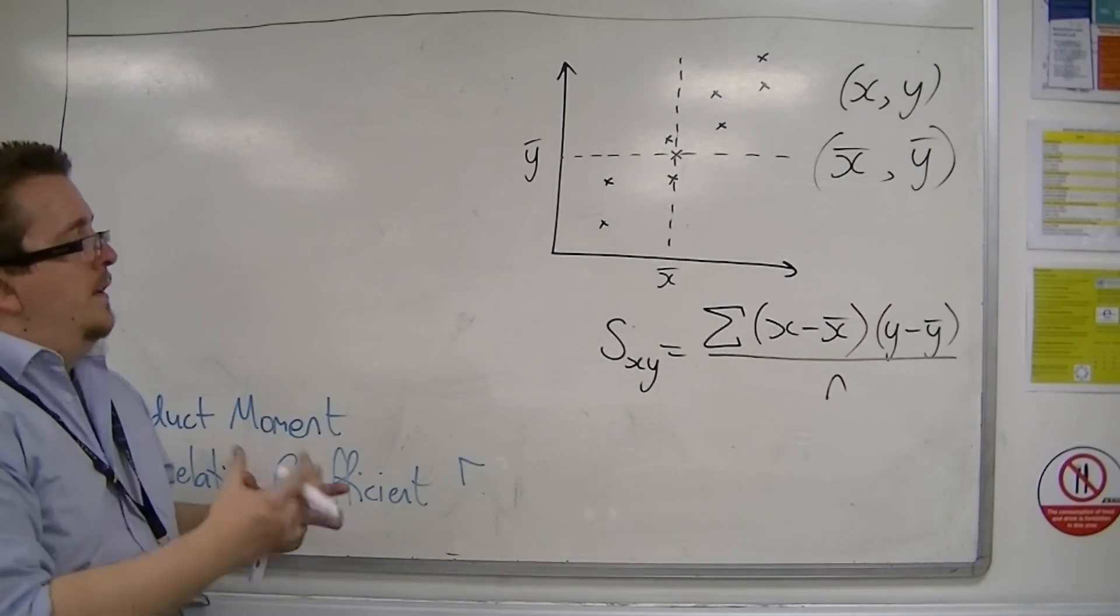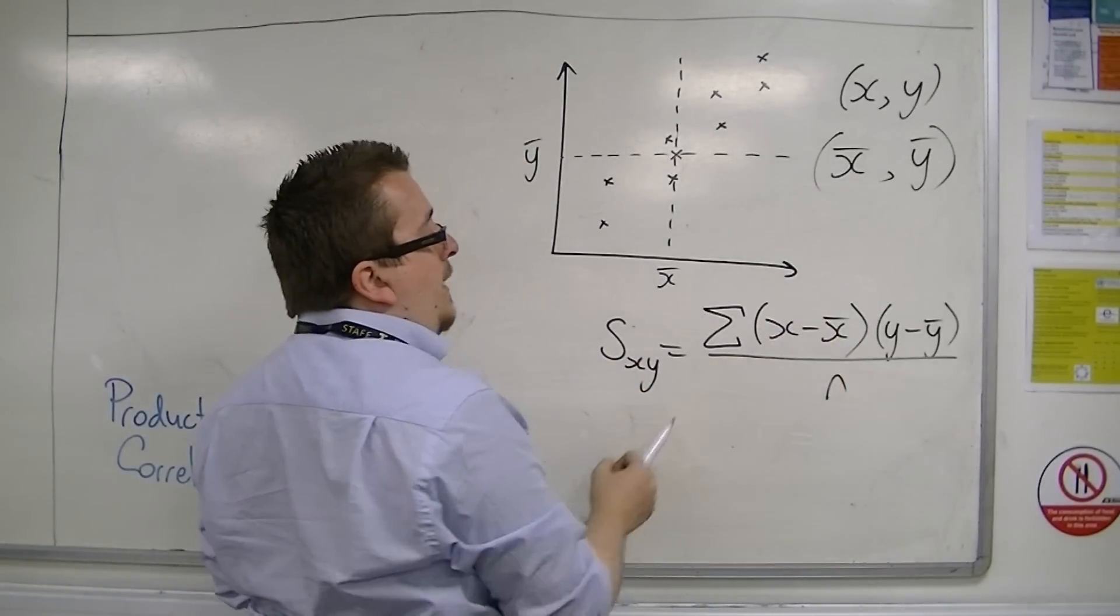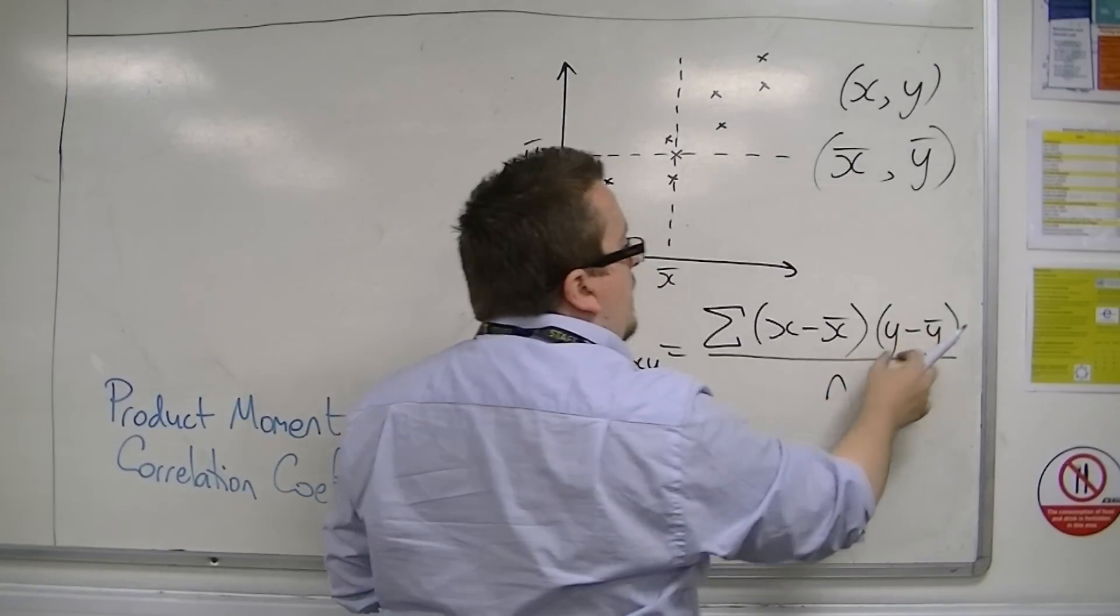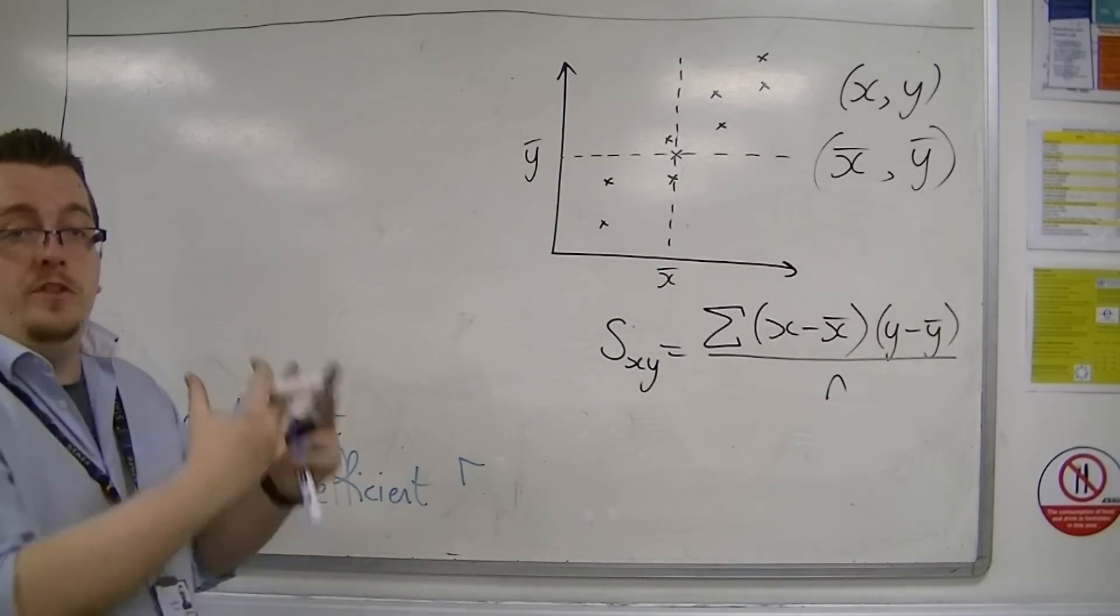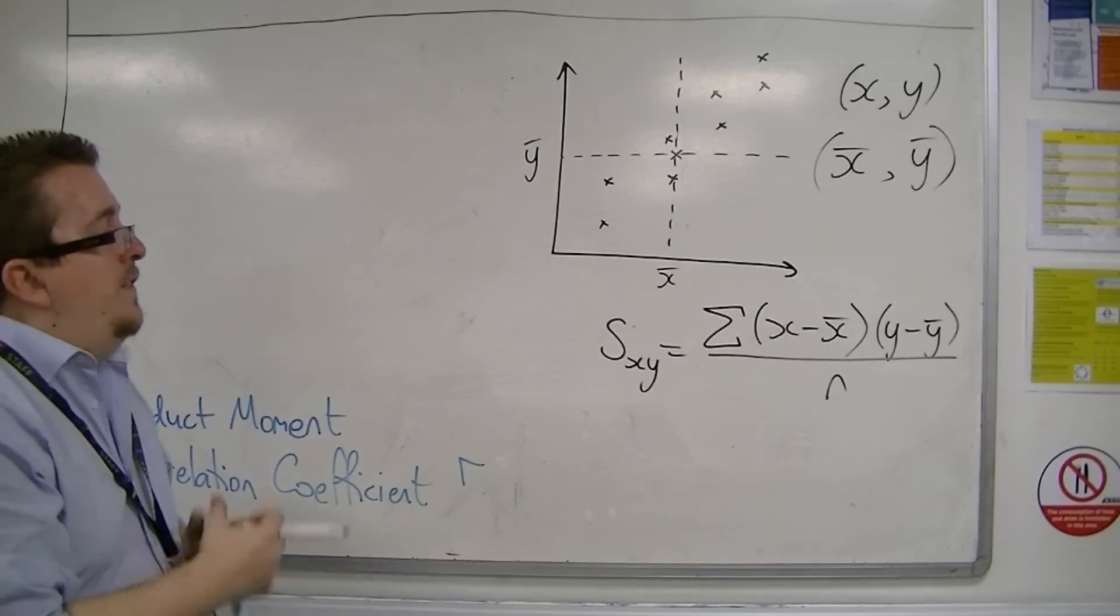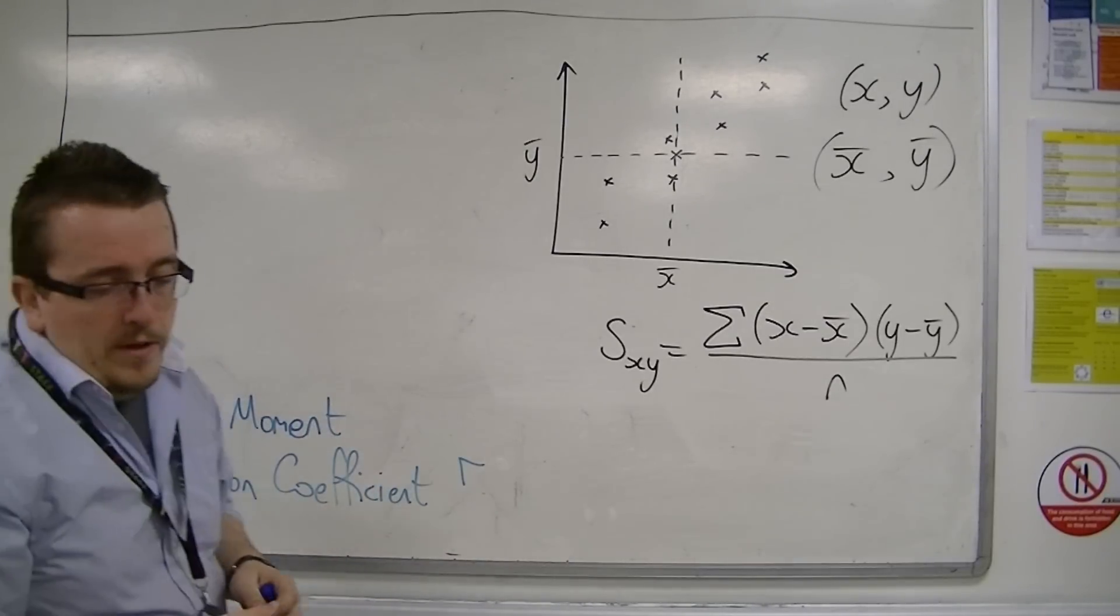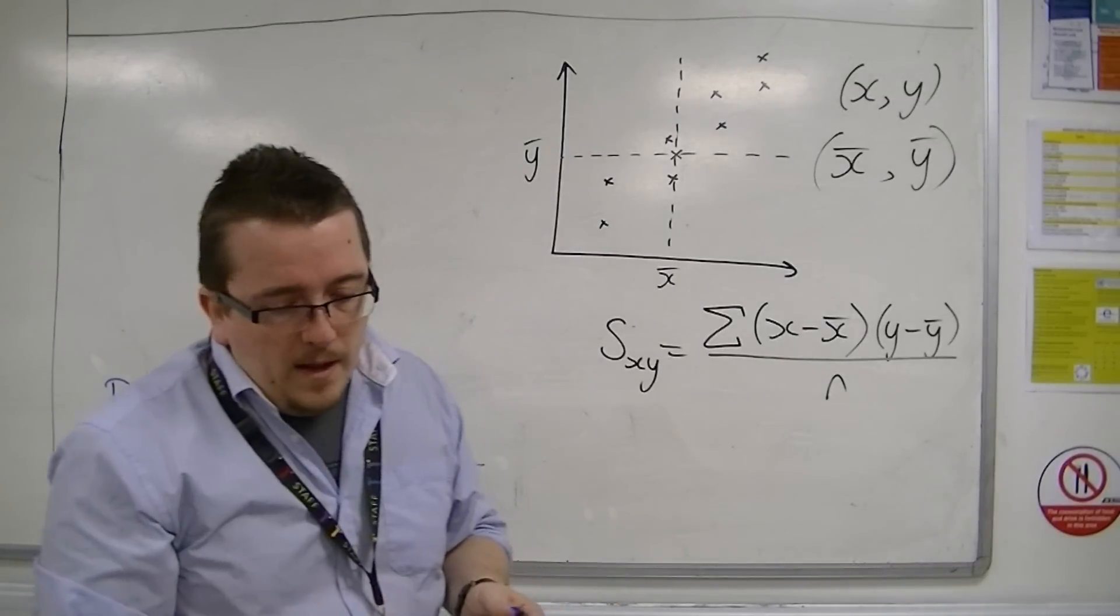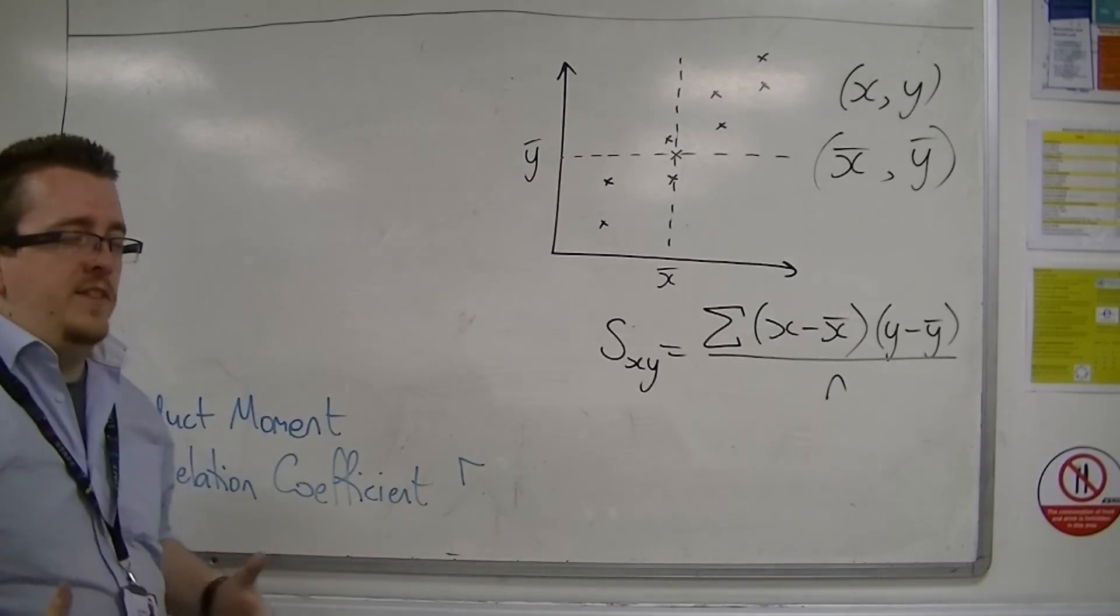You take the mean from each of the x-values, you multiply that by y minus the y-bar values, you add them all together, and you divide through by n. So, this would give you the covariance. It is relatively a measure to the extent of how correlated they are.